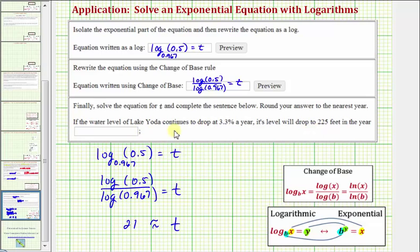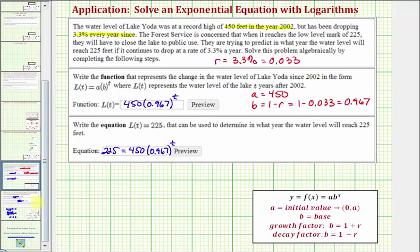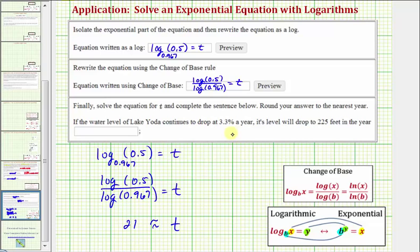But notice how we're asked to enter the year in which the water level would reach 225 feet, not how many years it would take, which means we have to take the base year, which was the year 2002. So we need to take the year 2002 and add the approximate value of t, which is 21. So the year would be 2023. So if the water continues to drop at 3.3% a year, we'd reach 225 feet in approximately 2023.